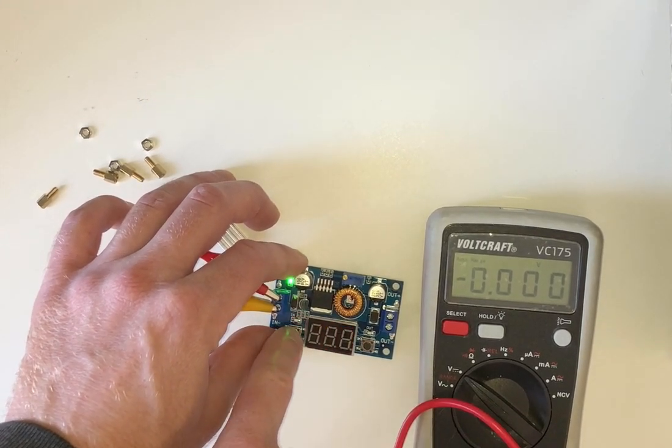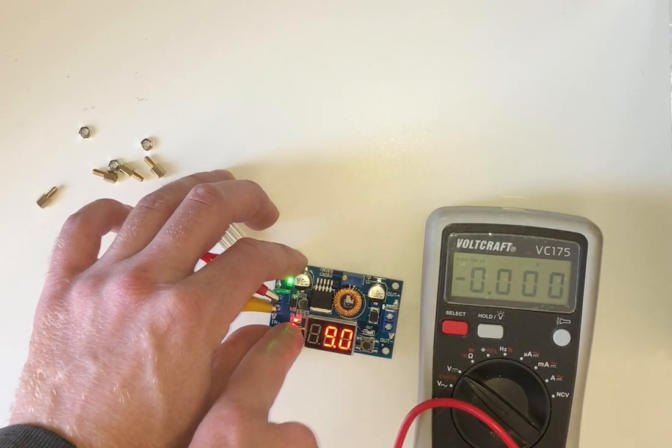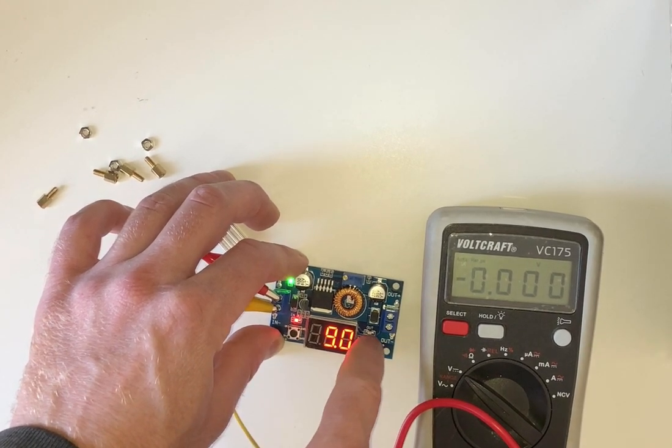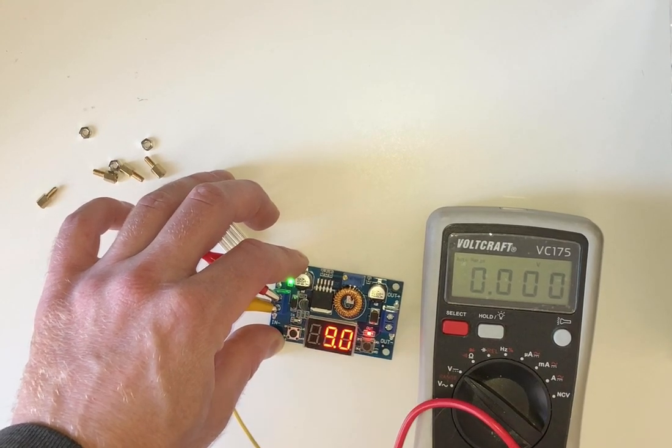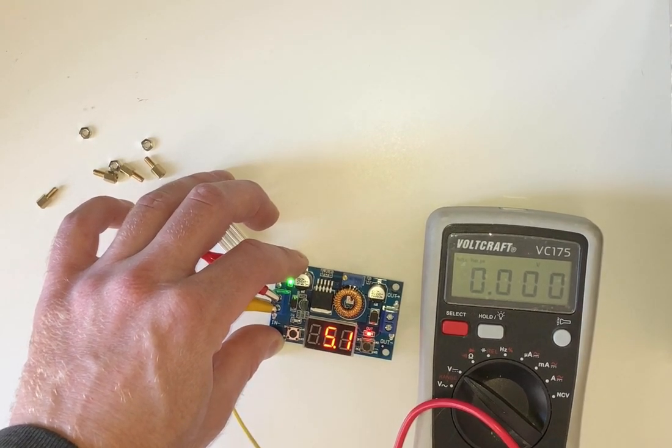So we have two buttons here and this one turns on and off the display and this one switches between input and output voltage. So this is nine volts in and this is five volts out.